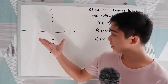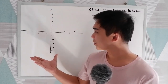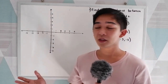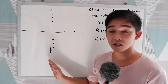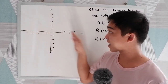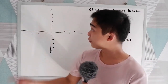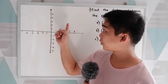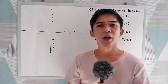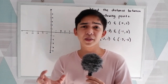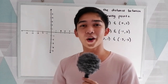We have here the partition plane, or rectangular coordinate system — the y-axis and the x-axis. And of course, this is our quadrant 1, 2, 3, and 4. Now, we will be discussing the distance between two points.